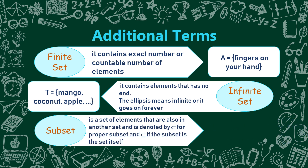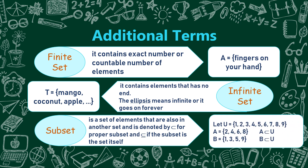A subset is a set of elements that are also in another set, denoted by this symbol for proper subset, and this other symbol if the subset is the set itself. Example: let U = {1, 2, 3, 4, 5, 6, 7, 8, 9}, set A = {2, 4, 6, 8}, and set B = {1, 3, 5, 9}. All elements of A and B are also found in set U — so we can say set A is a subset of U, and set B is a subset of U.